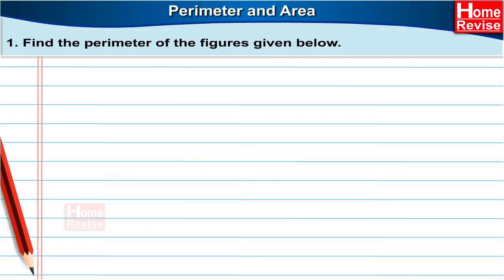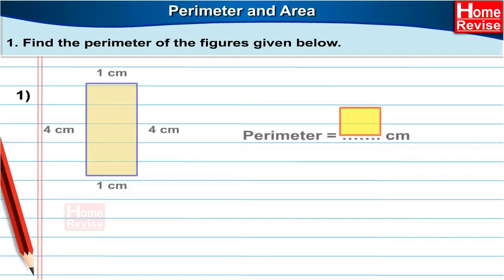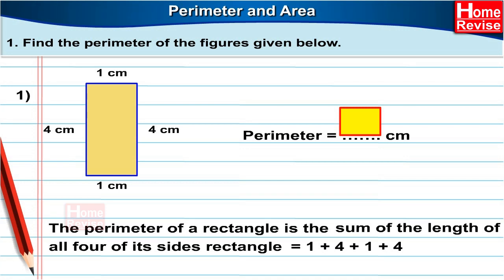Exercise number one: Find the perimeter of the figures given below. Number one: It is a rectangle with sides of one centimetre, four centimetres, one centimetre and four centimetres. The perimeter is equal to the sum of all four sides of a rectangle. So it is one plus four plus one plus four, which is equal to ten centimetres. Therefore, the perimeter is ten centimetres.